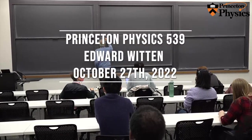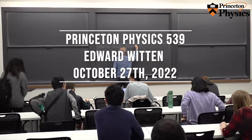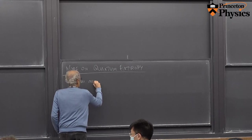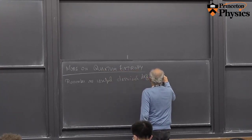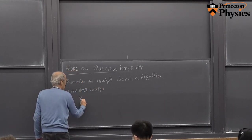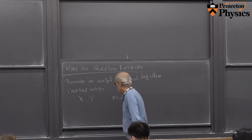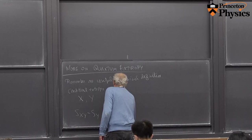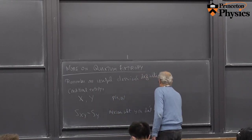Today we're going to do more on quantum entropy. Remember that one useful definition classically was conditional entropy. You have two probability distributions, or two random systems, x and y, with probability distribution p of x_i and y_j. Then S(XY) minus S(Y) measures what you don't know about X after learning Y.